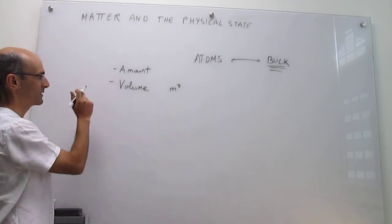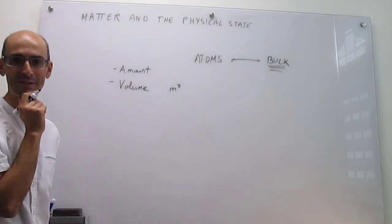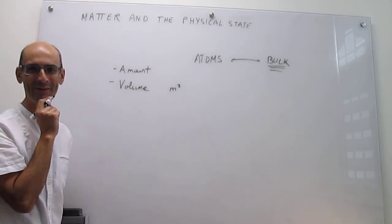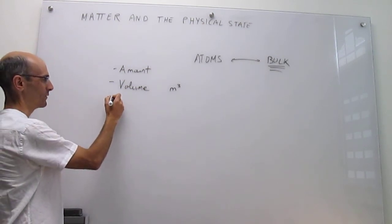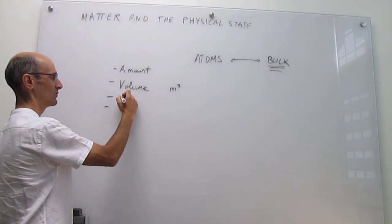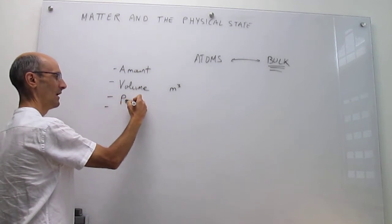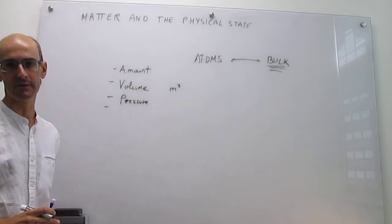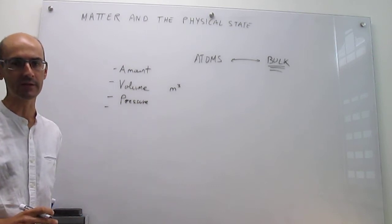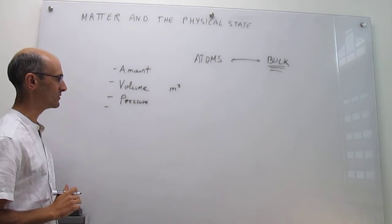So those are two of the five variables that you need to specify in order to uniquely determine the physical state. Let's continue with the rest. There's also going to be the pressure. And we're going to dedicate future videos to talking about the pressure in this introductory chapter. So we're not going to talk about it just now.